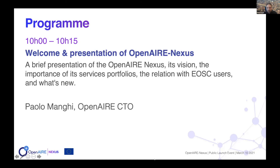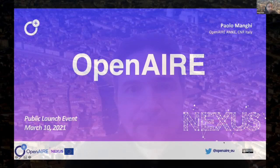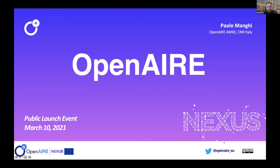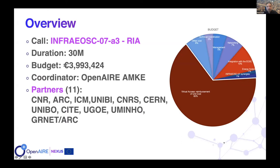Thank you, Androniki. I'm Paolo Manghi. I am the CTO of the OpenAir Infrastructure and I'm coordinating this project, OpenAirNexus. OpenAirNexus is one of the InfraEOSC07 projects funded together with others to deliver services in support of the EOSC and to contribute to the overall construction of the EOSC. Like the other projects, it has a duration of 30 months and a budget of around 4 million.